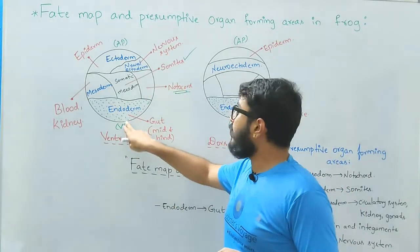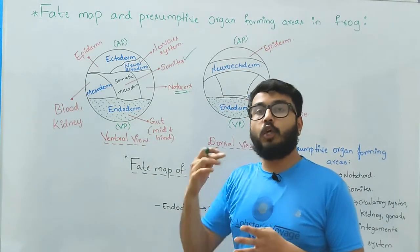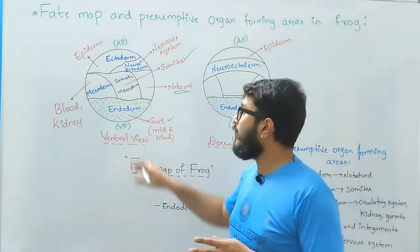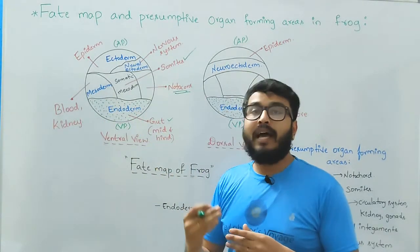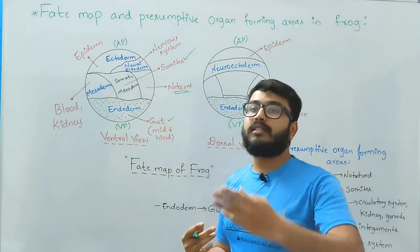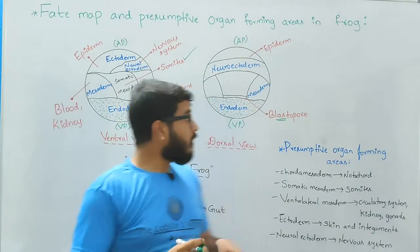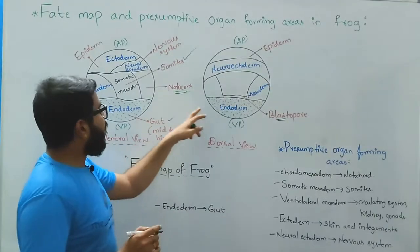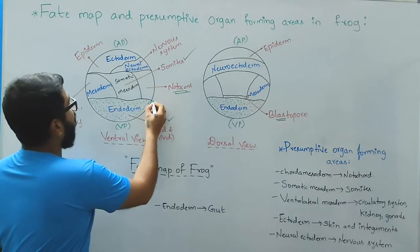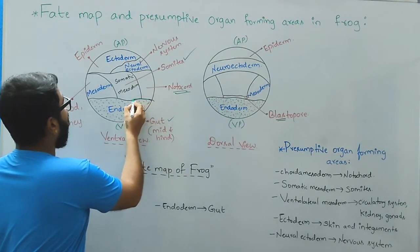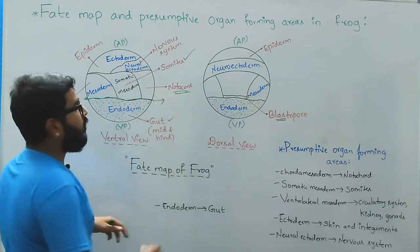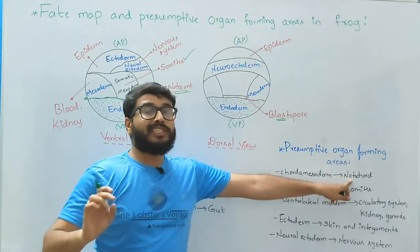The endoderm, which is thickly laden by the yolk content, gives rise to the gut region, both midgut and hindgut. The yolk content in the endoderm helps for the formation of all these organs in later stages of development. From the dorsal region to the ventral region along the endoderm there is something called chorda mesoderm region. This chorda mesoderm is the location where the notochord origination begins.